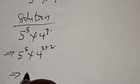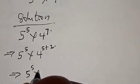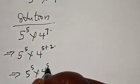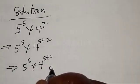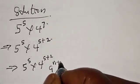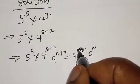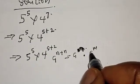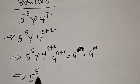This implies that we have 5 raised to power 5 multiplied by 4 raised to power 5 plus 2. Using the rule that a raised to power m plus n equals a raised to power m multiplied by a raised to power n, this implies we have 5 raised to power 5 multiplied by 4 raised to power 5 multiplied by 4 raised to power 2.